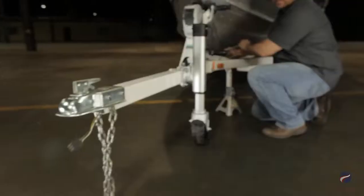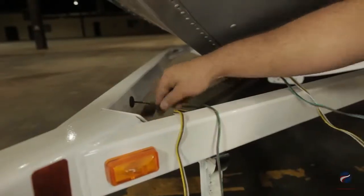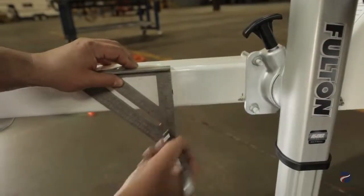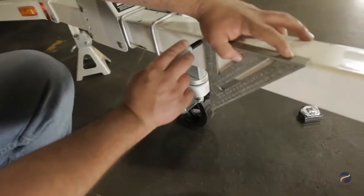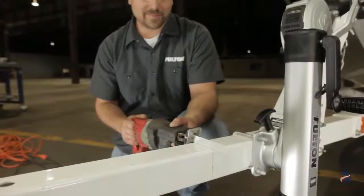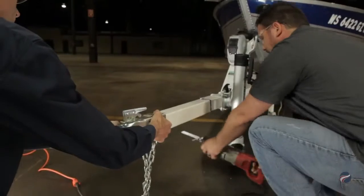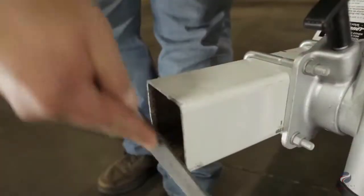Be sure all the brake lines and wires are out of the tongue. Using a square, scribe a line around the tongue to indicate the cut location. Cut the tongue off at the sideline. Remove all burrs.